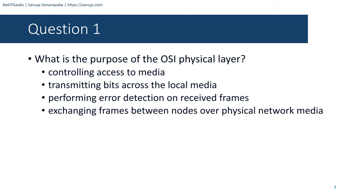Question number one: What is the purpose of the OSI physical layer? The options are: controlling access to media, transmitting bits across the local media, performing error detection on receive frames, or exchanging frames between nodes over physical network media. The answer is transmitting bits across the local media.